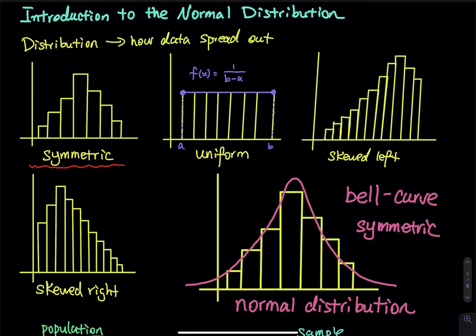The third type is skewed to the left, which means we have a long tail on the left and a peak on the right. The next type is skewed right, meaning we have a long tail on the right and the peak is on the left. We talked about these four types of distribution, and the uniform distribution was covered extensively.